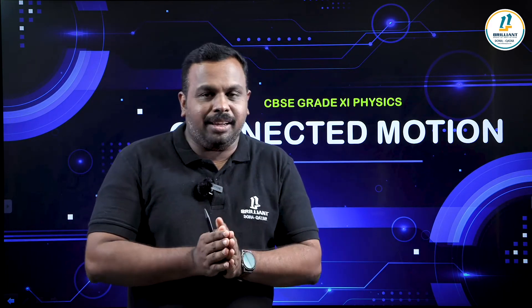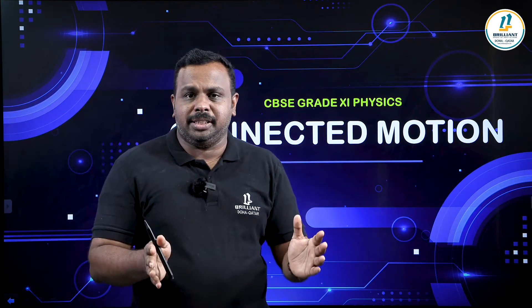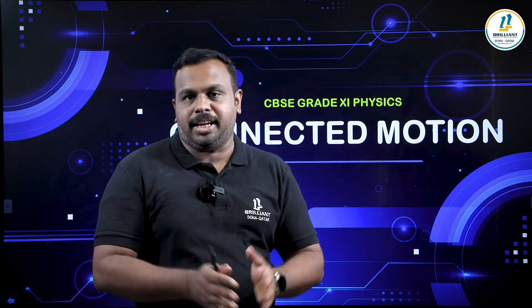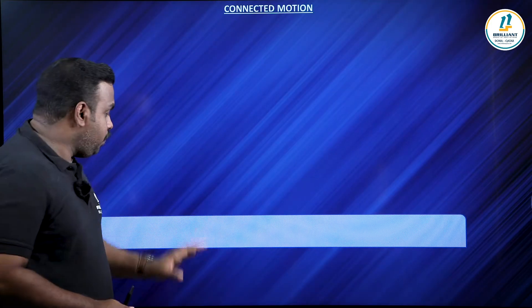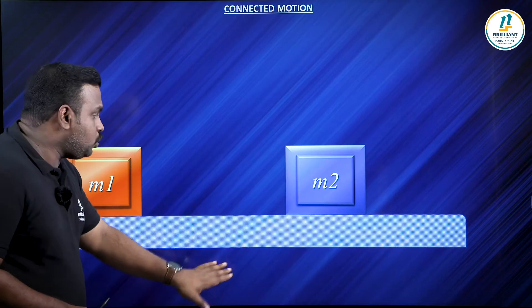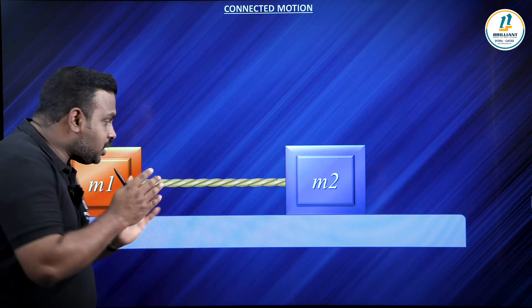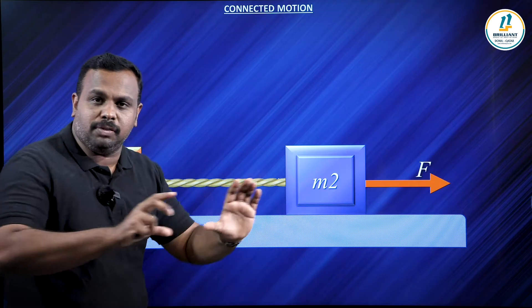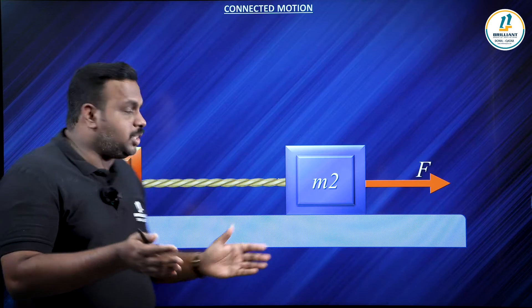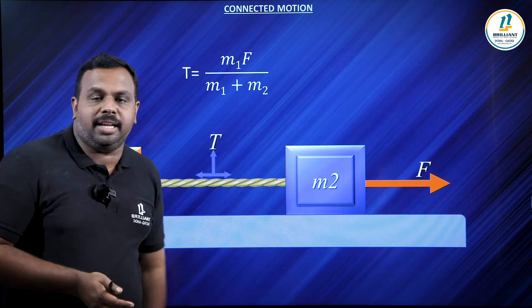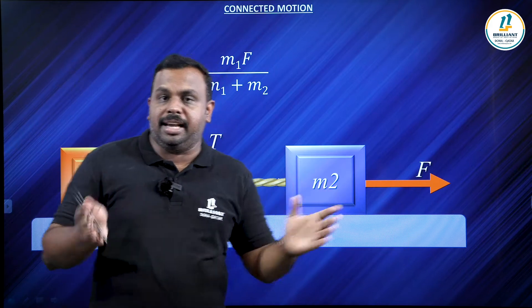We have already discussed a case where two masses are connected by a string and if that system is moving horizontally, how to calculate the tension. We got an answer — tension T is equal to M1F divided by M1 plus M2, where F is the external force.